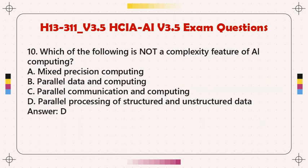Question 10: Which of the following is not a complexity feature of AI computing? A. Mixed precision computing. B. Parallel data and computing. C. Parallel communication and computing. D. Parallel processing of structured and unstructured data. Answer: D.